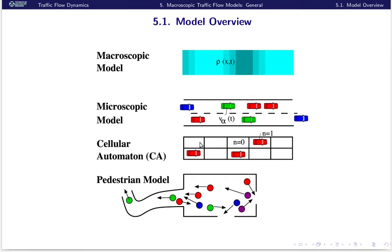In each cell of a microscopic cellular automaton model, it can be occupied or not occupied by a vehicle, but we also have cellular automata for macroscopic models. So this is more a mathematical realization. Finally, there is also a sort of microscopic pedestrian model, where in contrast to all the above, we do not have directed traffic but undirected, fully two-dimensional traffic.